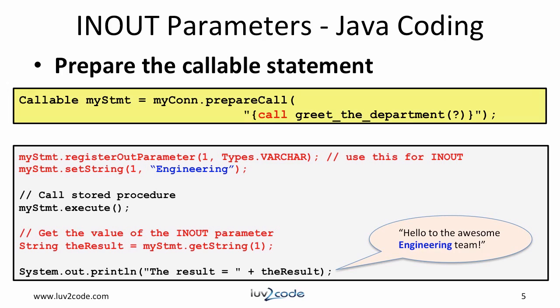To use in-out parameters, we prepare the call as before. We use the question mark as a parameter placeholder. Then we register the parameter as an out parameter — this supports in-out — and we also specify the type. Since we are passing in a string, we make use of Types.VARCHAR. The Types interface is defined in the java.sql package. Then we execute the stored procedure. Once the execution is complete, we can get the value of the out parameter. In this case, we retrieve it based on the parameter position. Remember that params are one-based. This will give us the output from the stored procedure, and then we can display it accordingly.